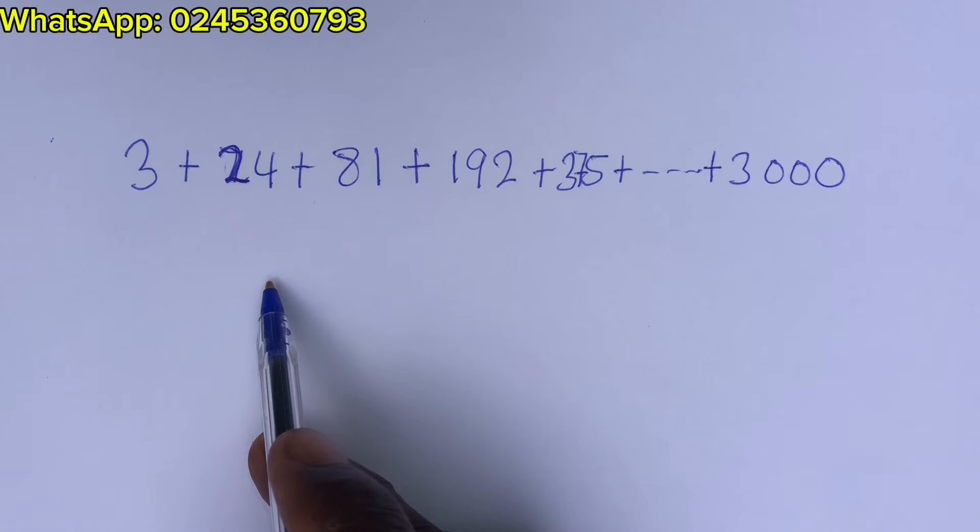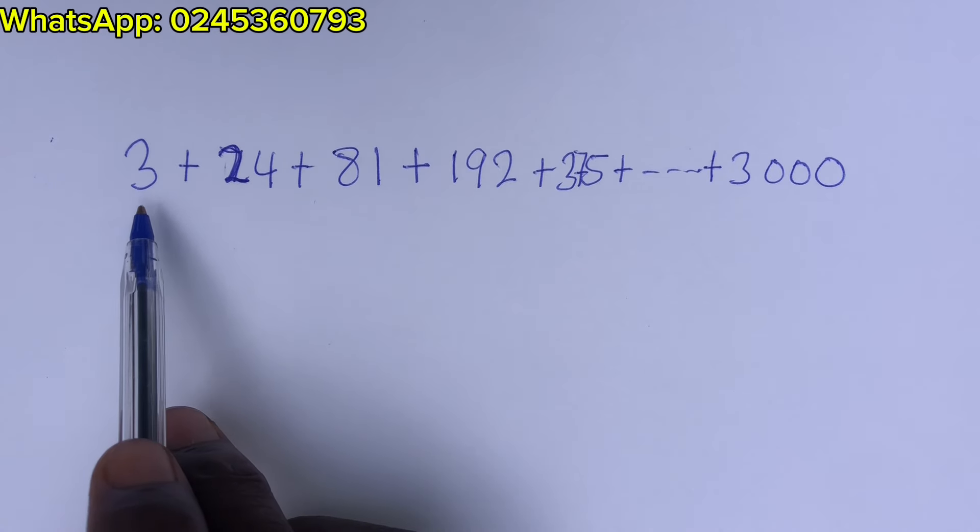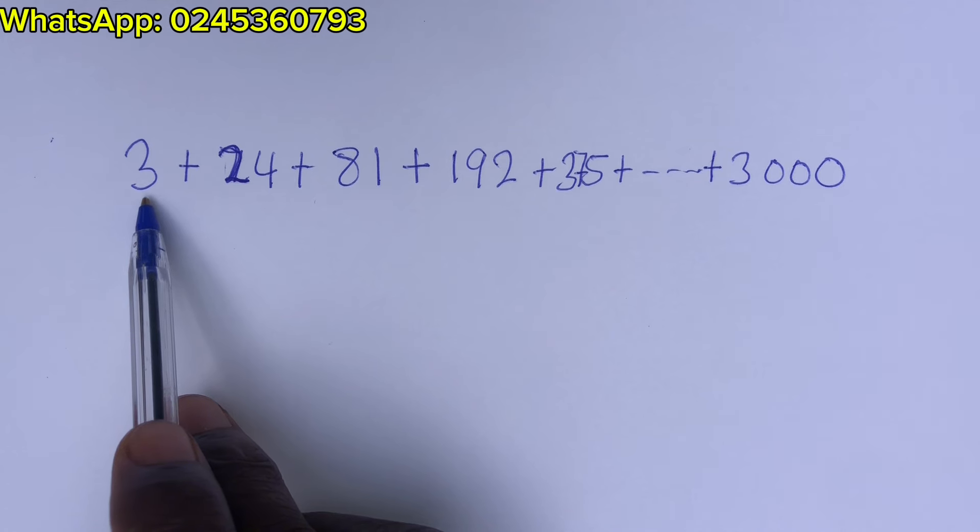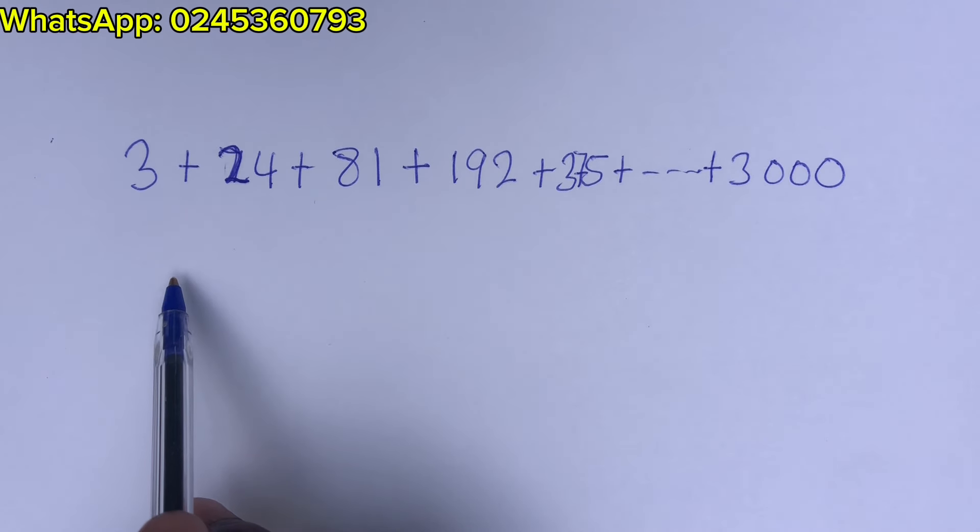Now, what could it be? Okay, look at this. Let us consider the first term, which is the smallest term, right? And see if we can factorize it out. It may lead to something. Always check or think inside the box. Don't think outside the box. So let's do that.